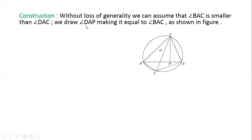Construction: Without loss of generality, we can assume that angle BAC is smaller than angle DAC. We draw point P such that angle DAP equals angle BAC, as shown in the figure.